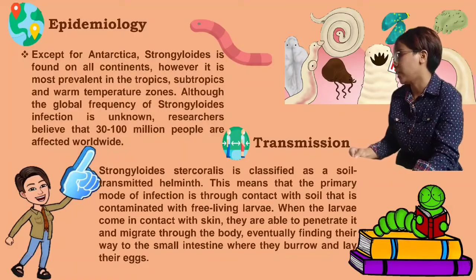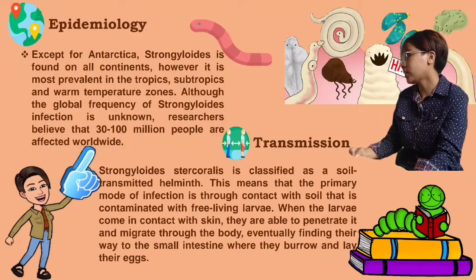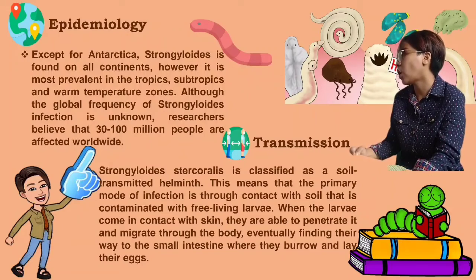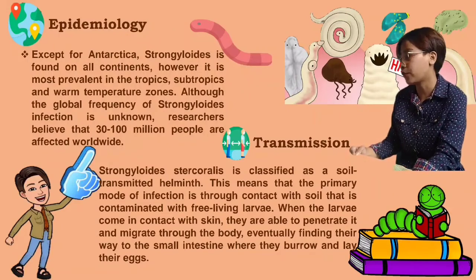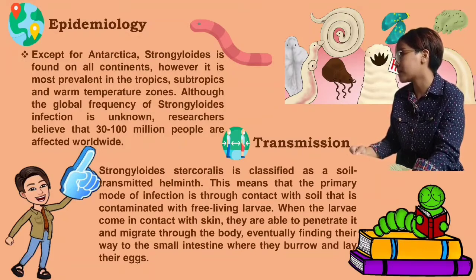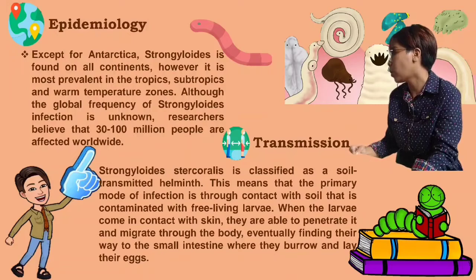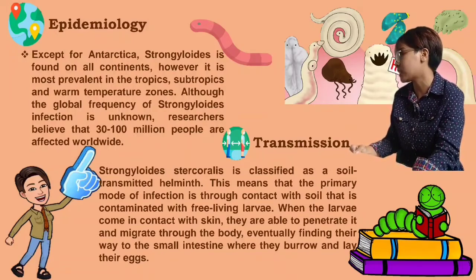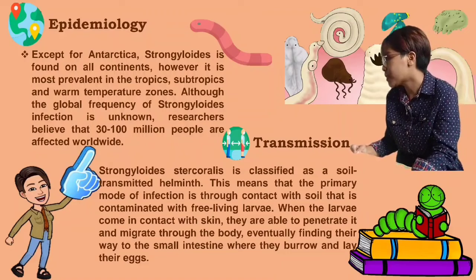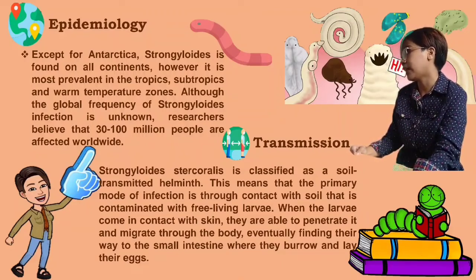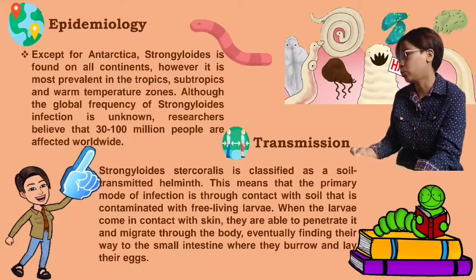For the epidemiology, except for Antarctica, Strongyloides is found on all continents. However, it is most prevalent in the tropics, subtropics, and warm temperate zones. Although the global frequency of Strongyloides infection is unknown, researchers believe that 30 to 100 million people are affected worldwide.